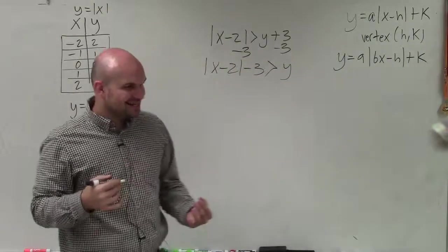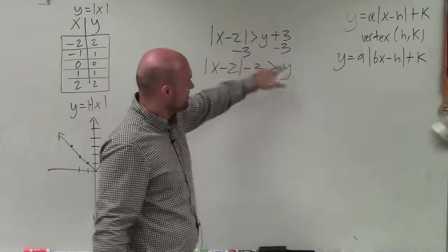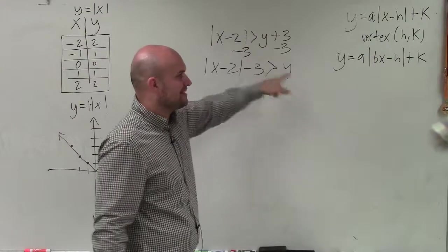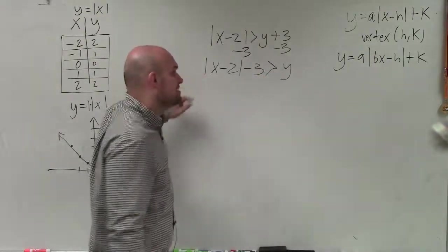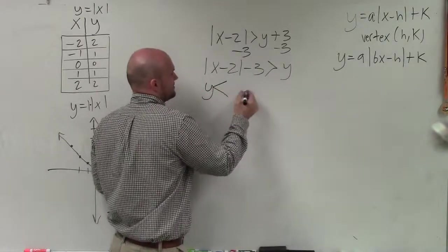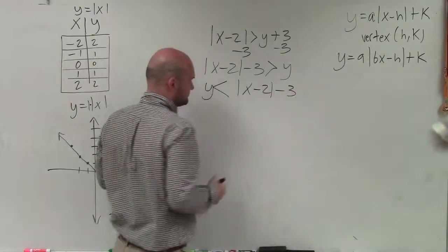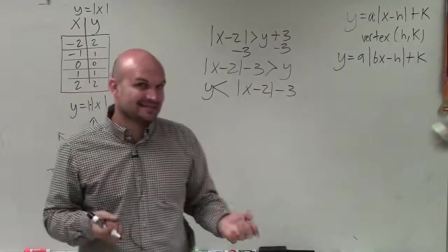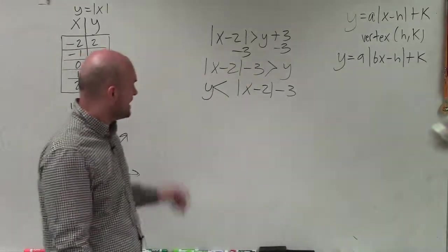But again, I kind of want the y on the left side. So notice that this is greater than y. Or if we read it from right to left, y is less than all of this. So therefore, I'm going to rewrite this as y less than absolute value of x minus 2 minus 3. So you see how I kind of did that? Kind of tricky. Notice how I kind of had to flip the sign when I rewrote it on the other side.